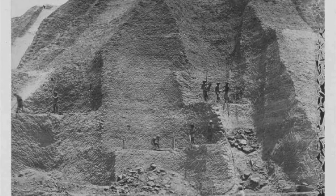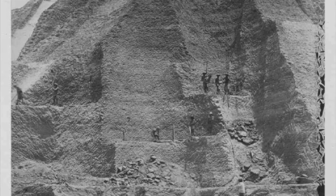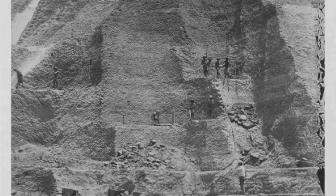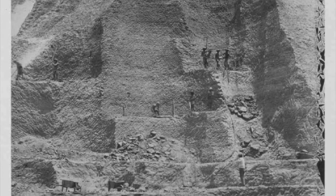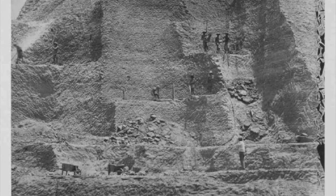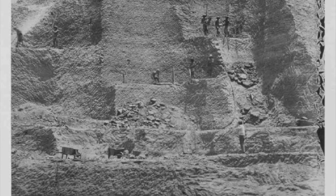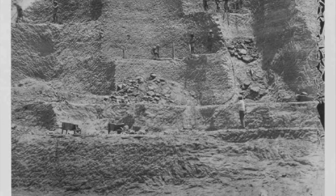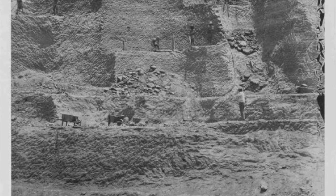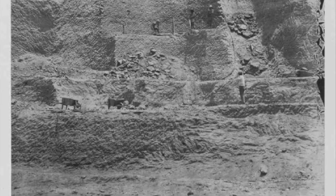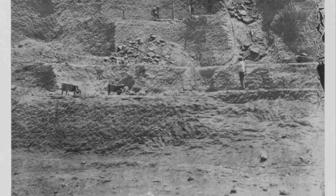A landscape formed by exquisite ecological processes was abstracted and reduced to saleable units. Of the 300,000 tons of guano exported annually from Peru in the 1860s, 40,000 of those landed in New York.